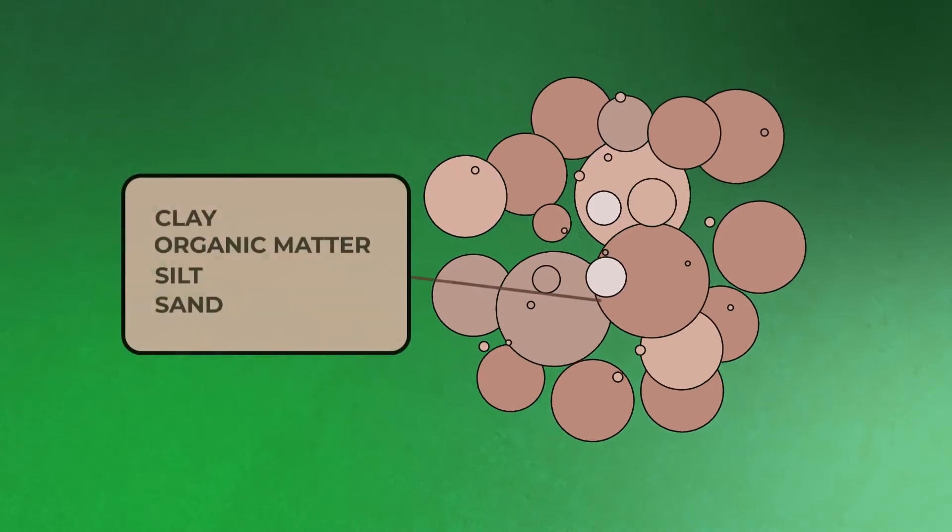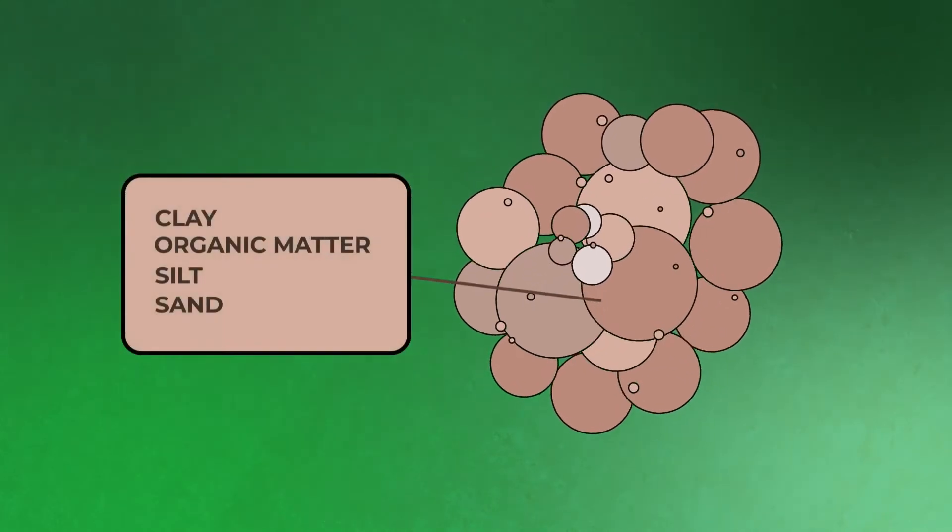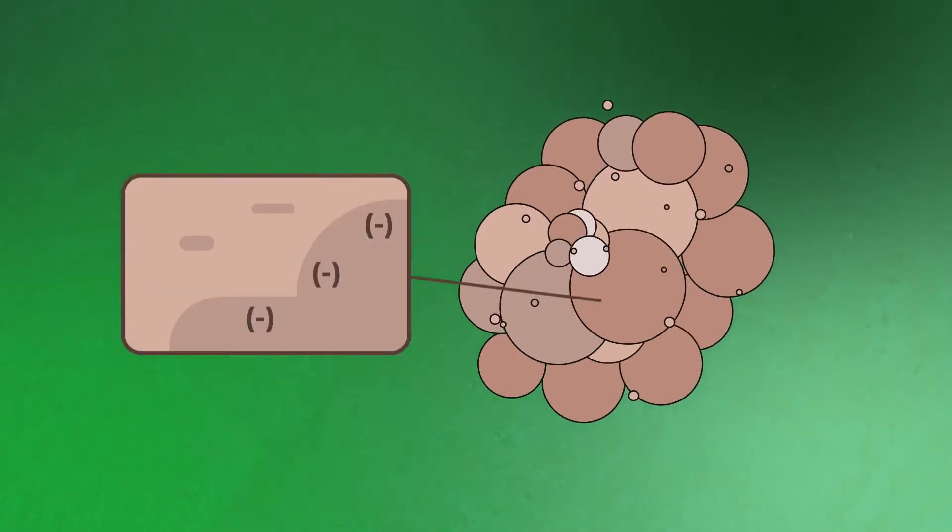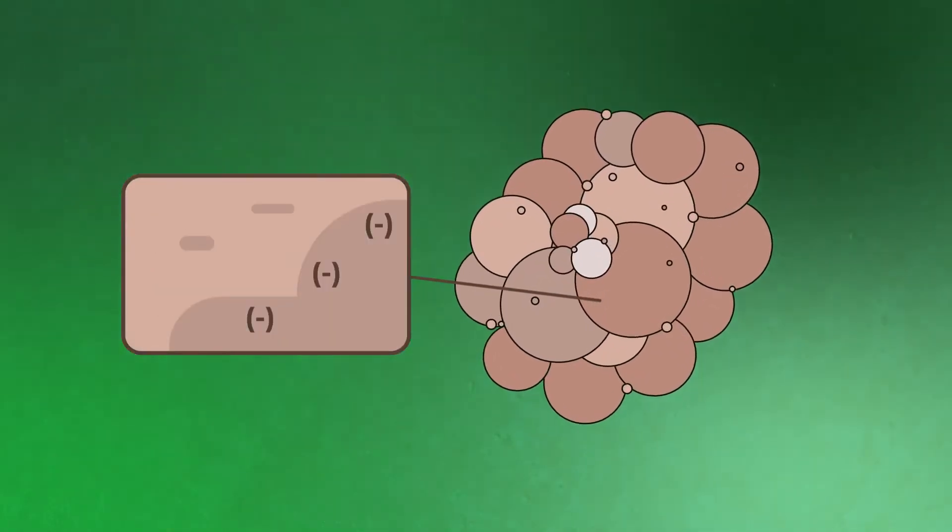CEC is the soil's ability to hold cations. Soils are made up of a number of different things, including clay and organic matter, which are negatively charged. These negative charges have the ability to hold positive charges just like a magnet. Those positively charged ions are called cations.